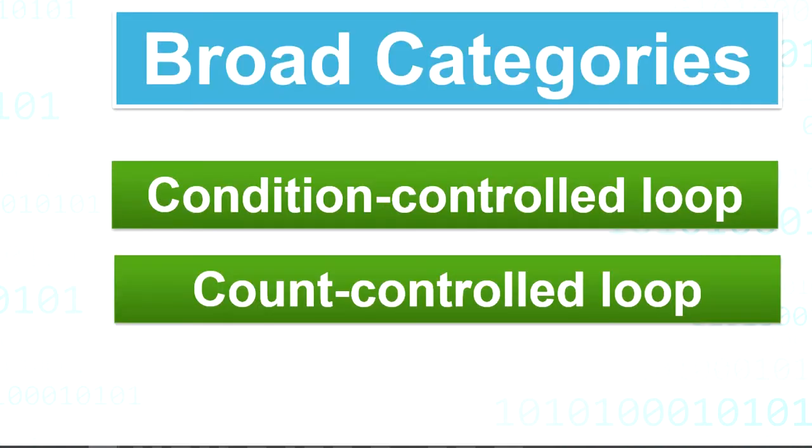There are two broad categories of loops: condition controlled and count controlled loop. A condition controlled loop uses a true or false condition to control the number of times that it repeats. A count controlled loop repeats a specific number of times.